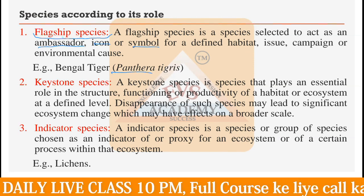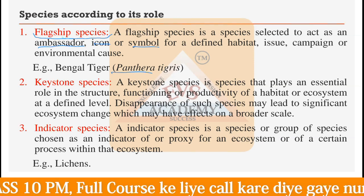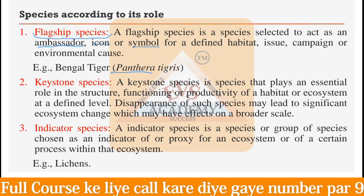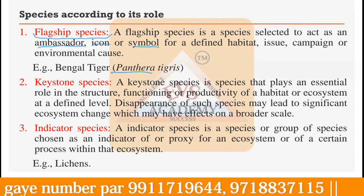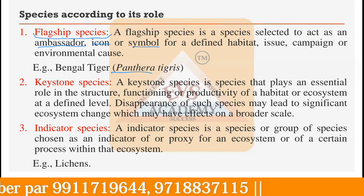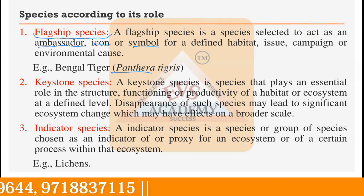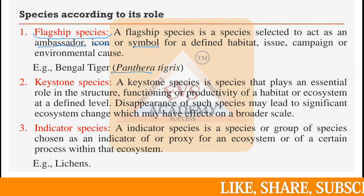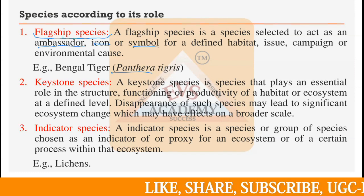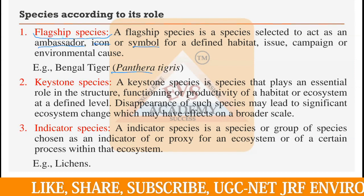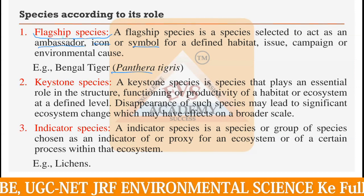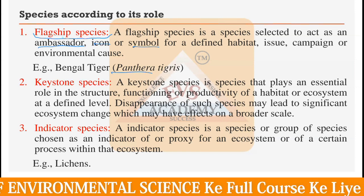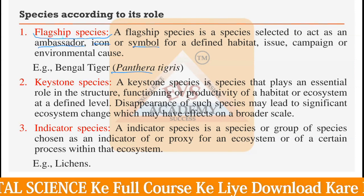For example, Ganga river dolphins are known as the only freshwater dolphins available all over the world in the Ganga river. So they are providing a name or fame to the Ganga river. The Ganga dolphin can be tagged as a flagship species of the Ganga river because it is acting as an ambassador of that river. Similarly, in every area or habitat, you can find species acting as an ambassador, and those can all be termed flagship species.